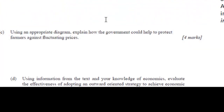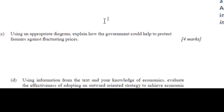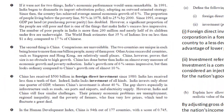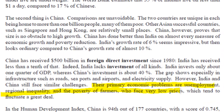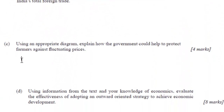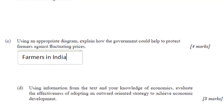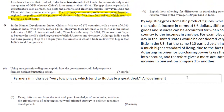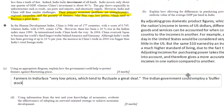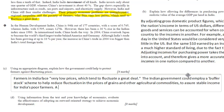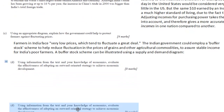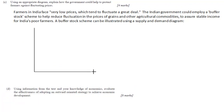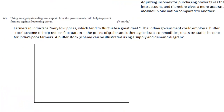Part C is a more typical data response question in that we are asked to use a diagram. We're asked to talk about what a government could do to assure stable prices for farmers in India. First I found a quote from the article that pointed to the problem and put that quote in my answer — it's always important to refer to the extract in your answers, even in Parts B and C. I'm recalling a concept known as the buffer stock scheme and I'm going to illustrate it with a graph, so pay attention.